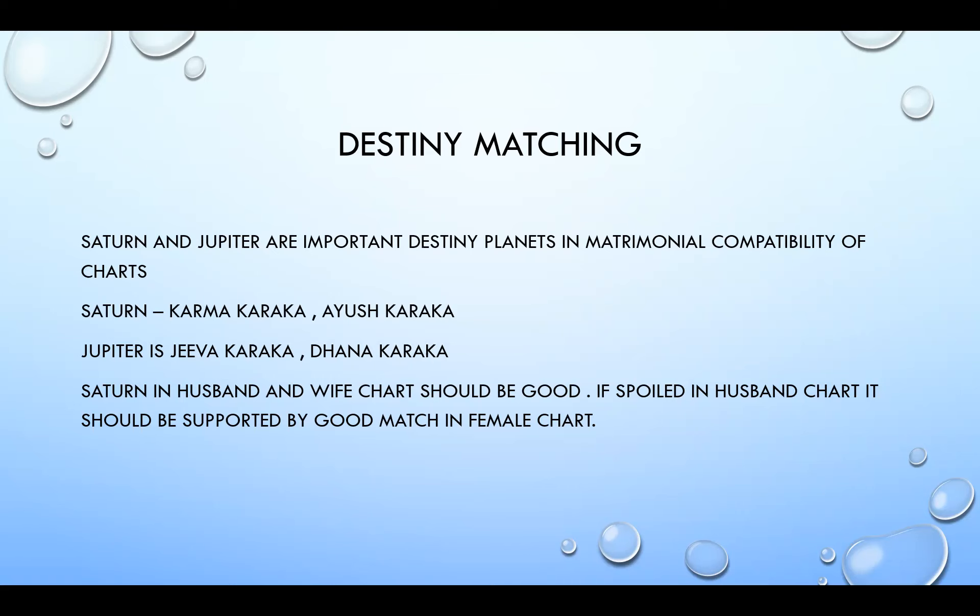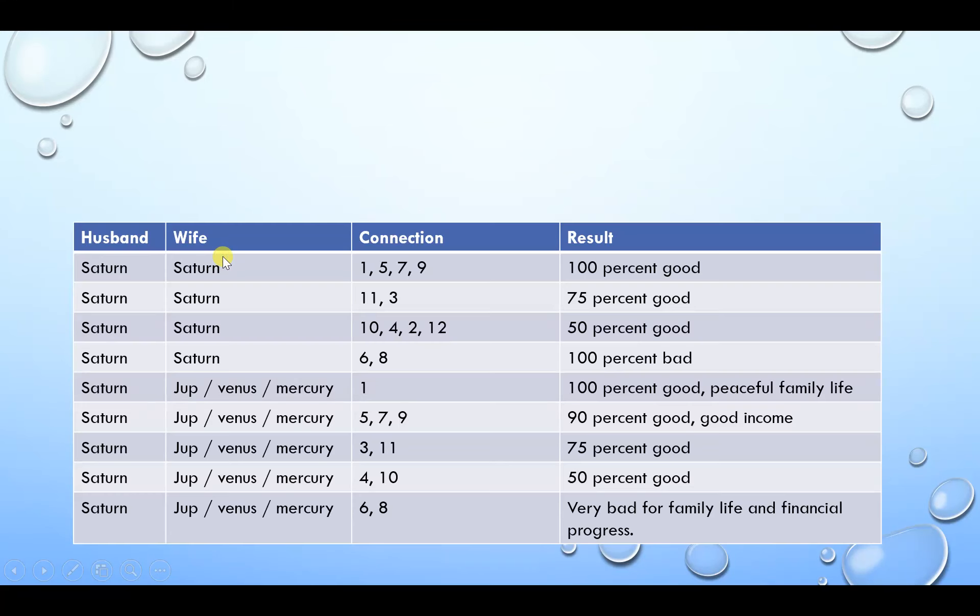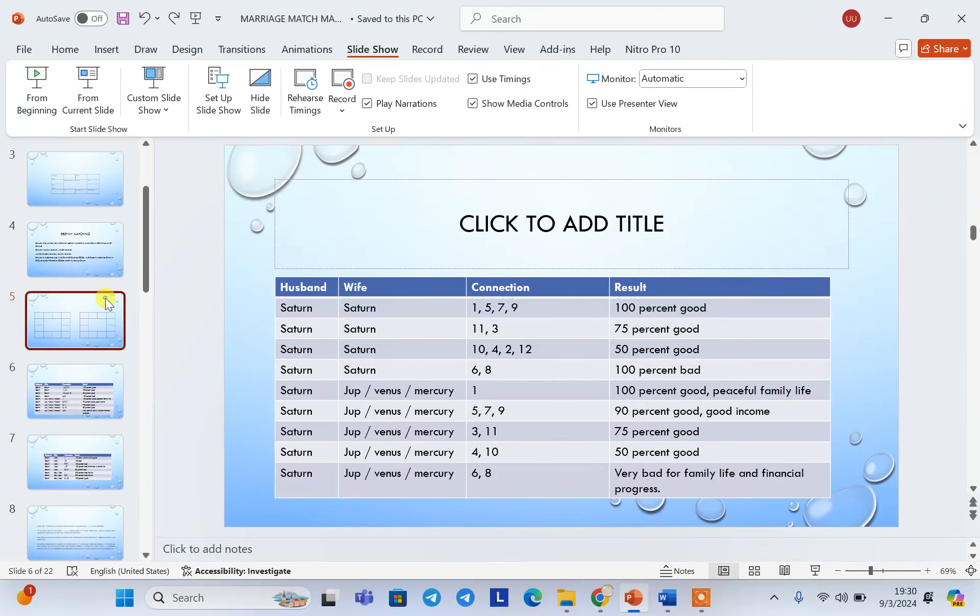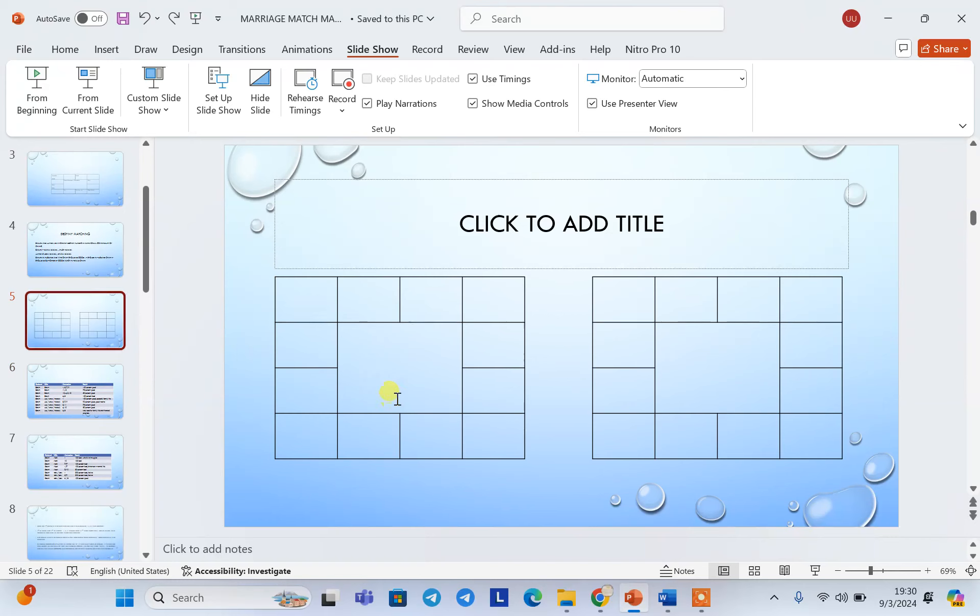This Saturn in husband and wife chart should be good because it is the destiny. If it is spoiled in husband chart, at least it should be in a good manner in wife chart. Or if it is spoiled in the wife chart, it should be good in the husband chart. This may not be easy to grasp for all of us. Let us take some charts. With the help of the charts I will try to explain this.